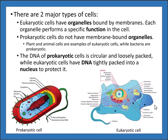Plant and animal cells are examples of eukaryotic cells, while bacteria are prokaryotic. The DNA of prokaryotic cells is circular and loosely packed, while eukaryotic cells have DNA that is tightly packed into a nucleus to protect it. A good way to remember this: eukaryotic cells do have membrane-bound organelles and prokaryotic cells have no membrane-bound organelles.